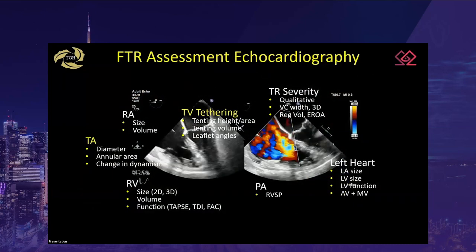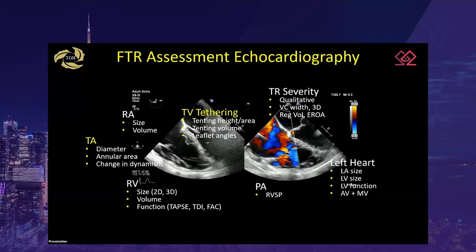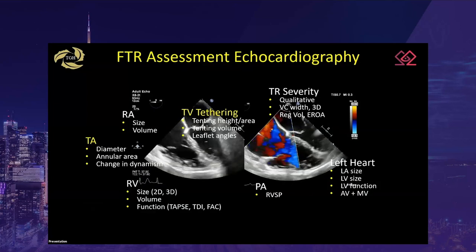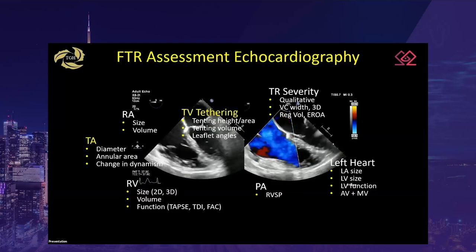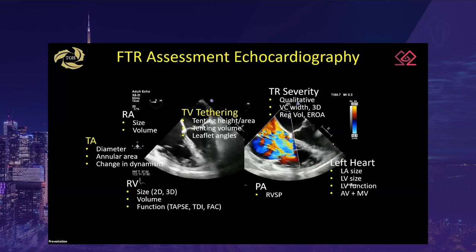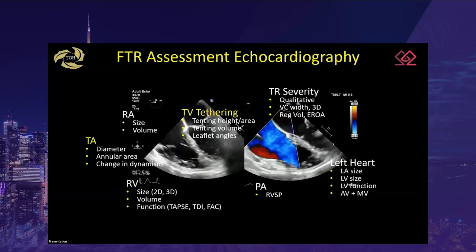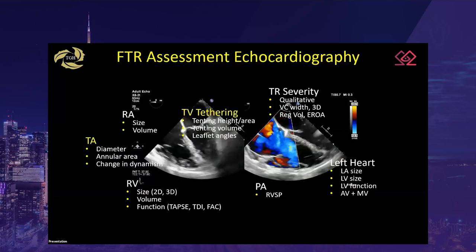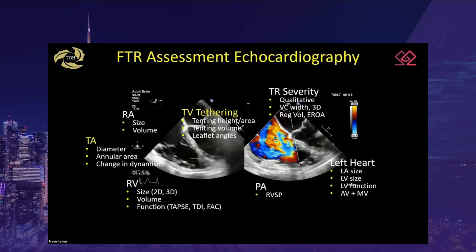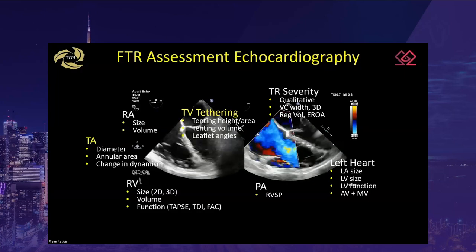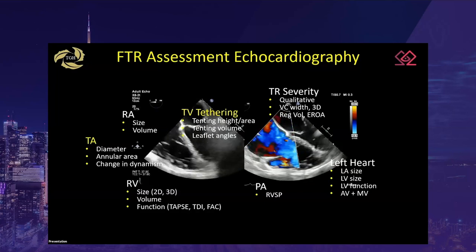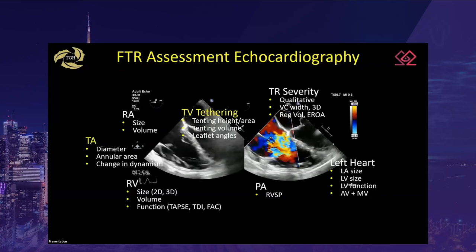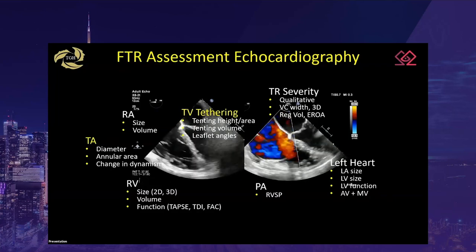Echocardiography provides a robust option for assessing both the etiology and pathology associated with functional tricuspid regurgitation. Specific assessment for functional tricuspid pathology involves determining tricuspid annular dimensions and the degree of tricuspid valve leaflet tethering. Remember that functional tricuspid regurgitation is less about the amount of regurgitation and more about the underlying structural changes — surgical intervention may occur even in the absence of tricuspid regurgitation.